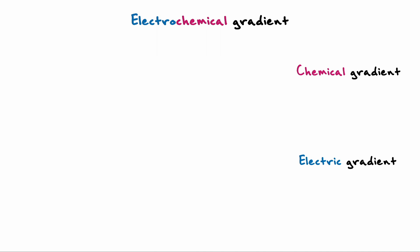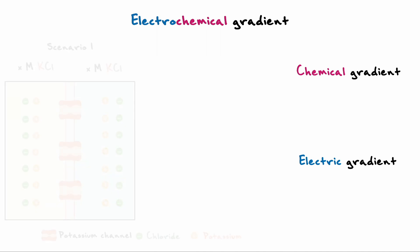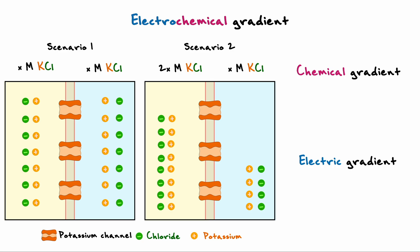To see how these forces influence ions, imagine two different scenarios. In the first, there are two equally concentrated solutions of potassium chloride that are separated by a membrane only permeable to potassium. Imagine that the solution on the left hand side has double the potassium chloride concentration with respect to the right side. Here again, the two solutions are separated by a membrane only permeable to potassium.